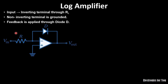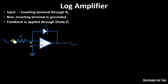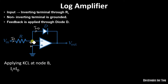This is our circuit. The input voltage V_in is applied to the inverting terminal, the non-inverting terminal is grounded, and the feedback is applied through the diode. If we assume this is point B and this is point A, then the voltage at point B is V_b and the voltage at point A is V_a. Let the input current be I_i and the feedback current through the diode be I_d.